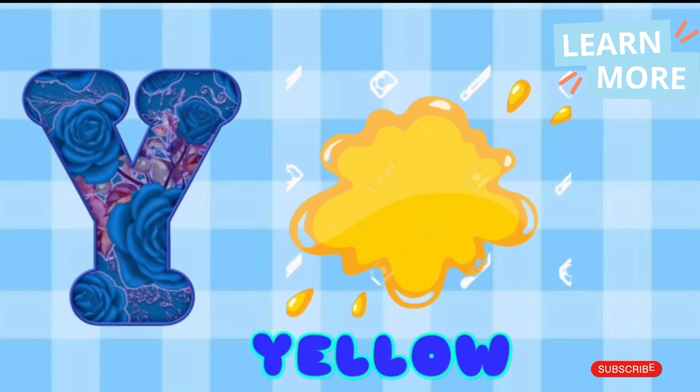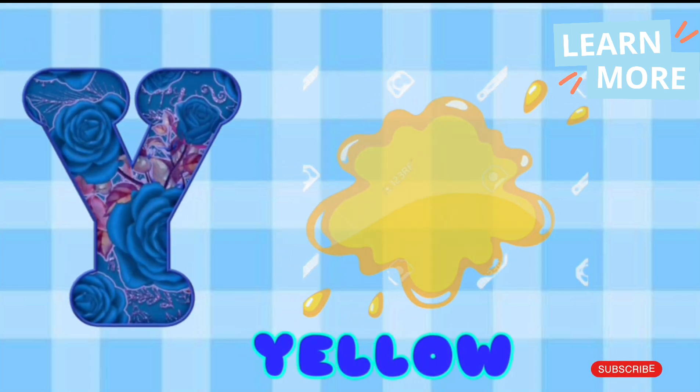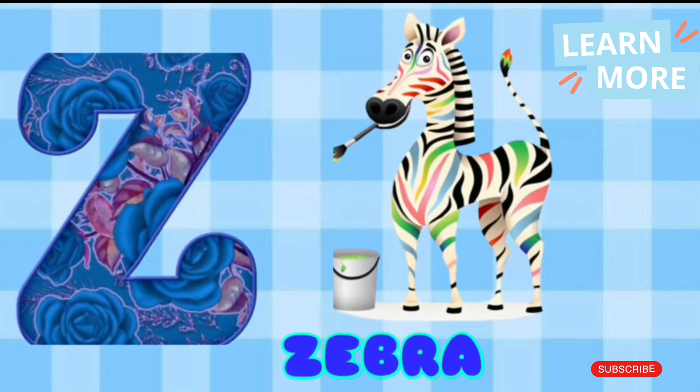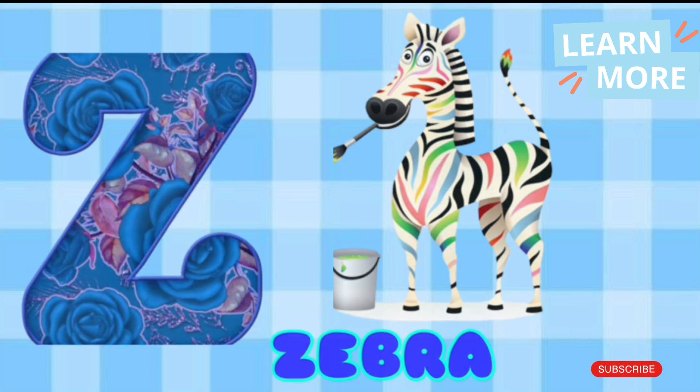Y is for yellow, y-y-yellow. Z is for zebra, z-z-zebra.